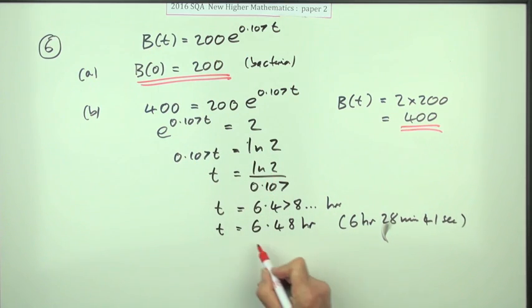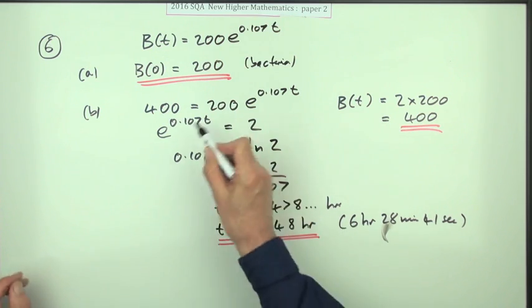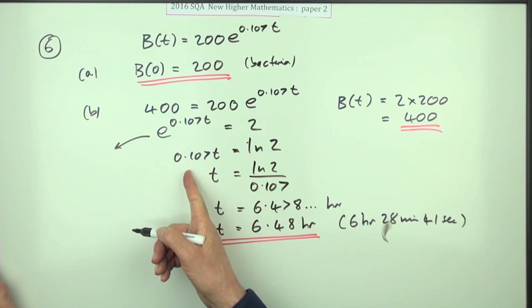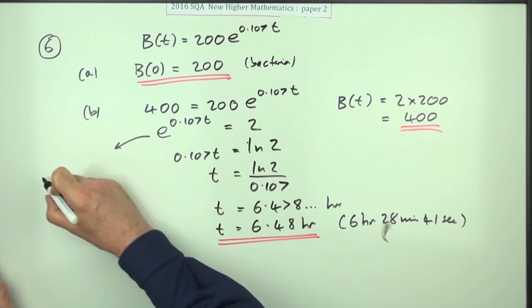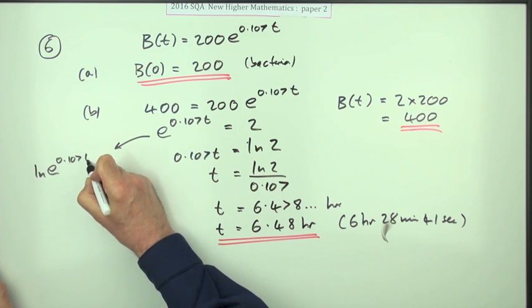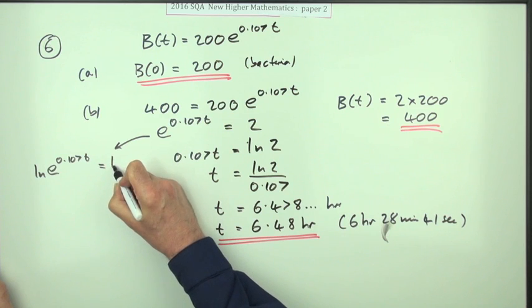And if that skip step is scary and you want to introduce logs, then from this line before you get to this line, you could see: take logs of both sides. ln e to the 0.107t equals ln 2.